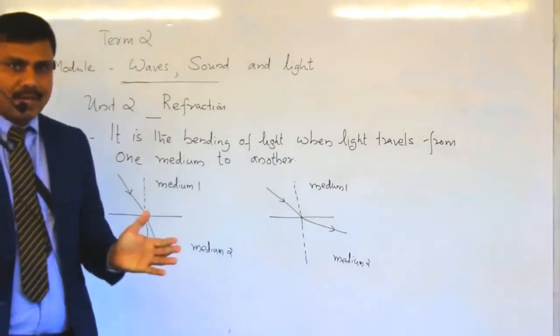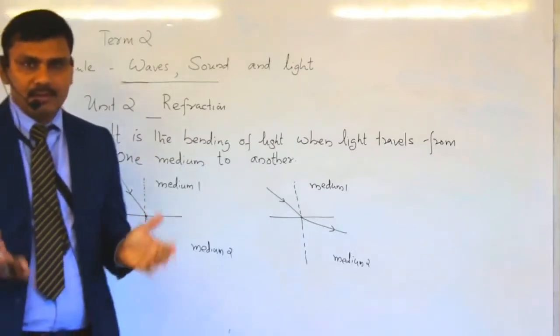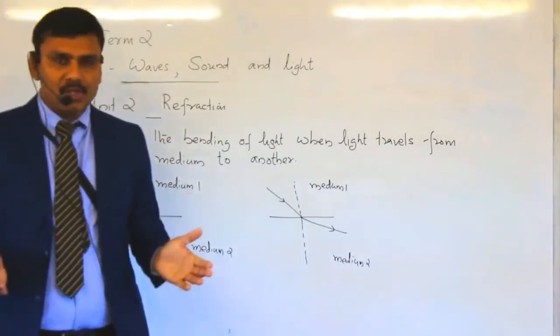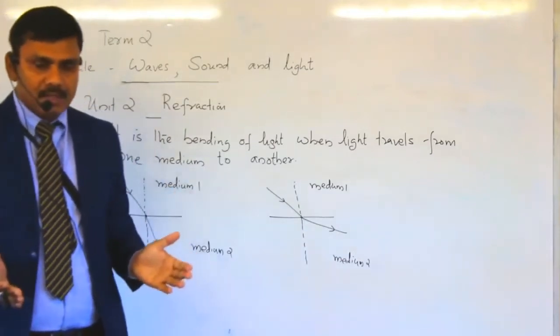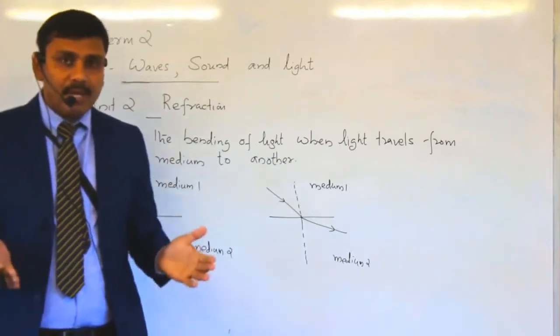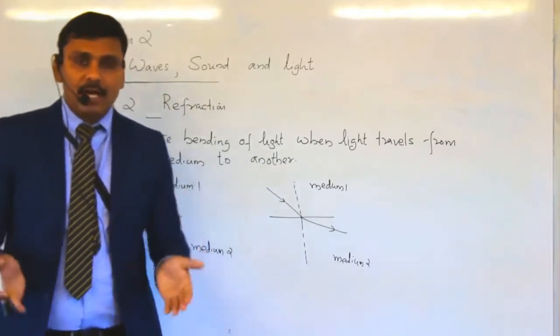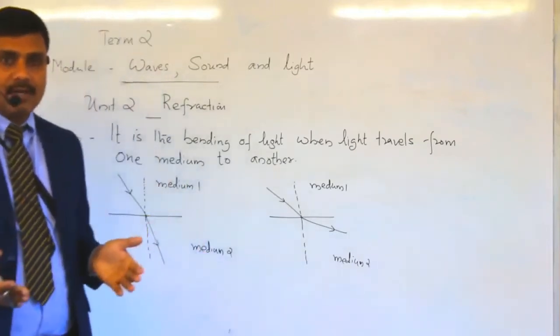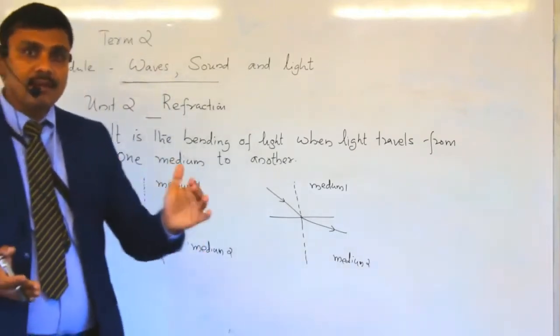It is known as linear propagation of light. Light travels in straight paths.